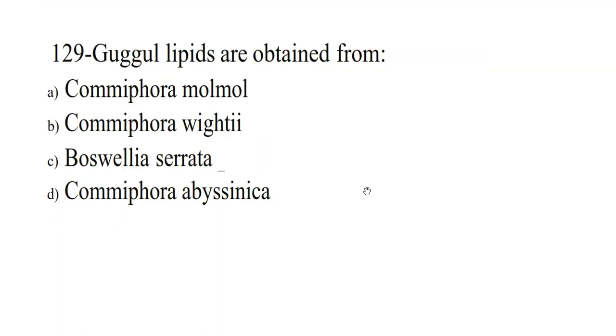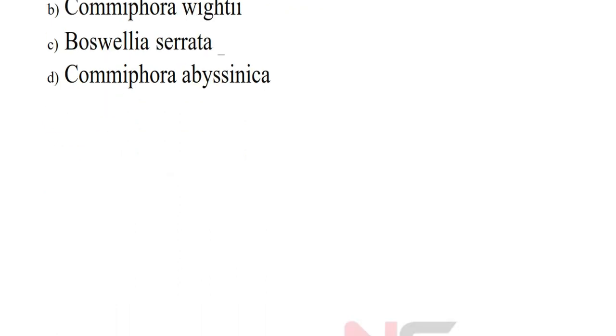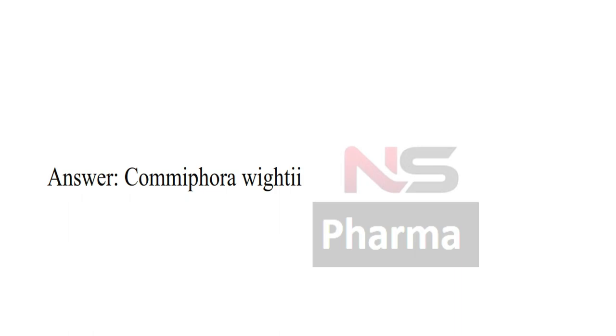Next question. Guggul lipids are obtained from: Option A Commiphora molmol, Option B Commiphora wightii, Option C Boswellia serrata, Option D Commiphora abyssinica. Answer: Commiphora wightii.